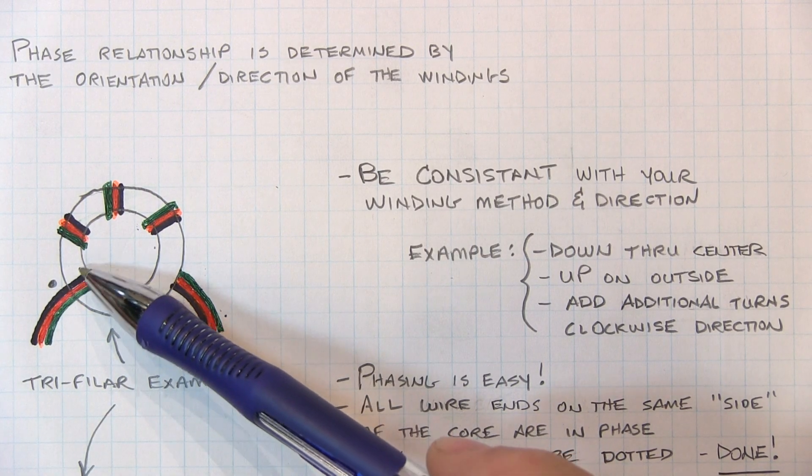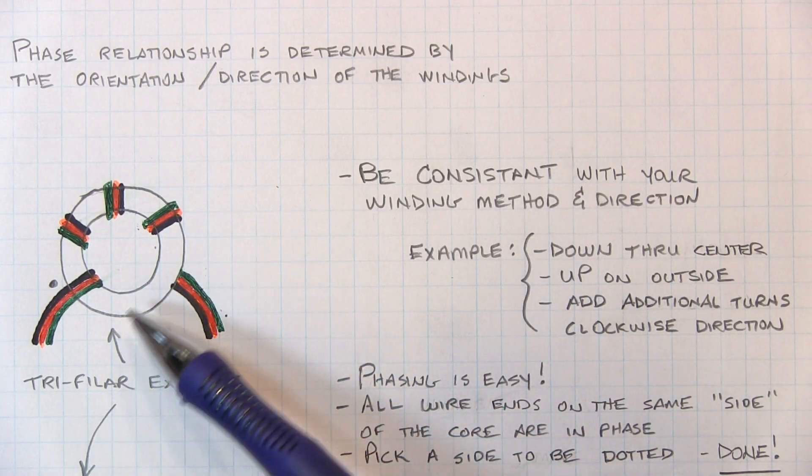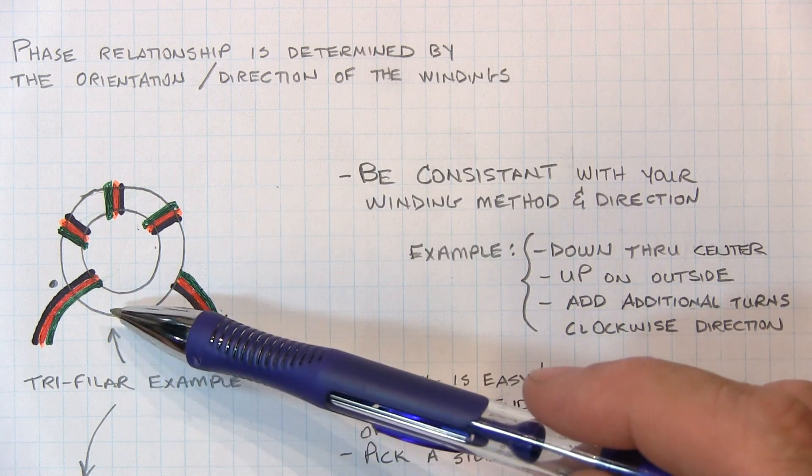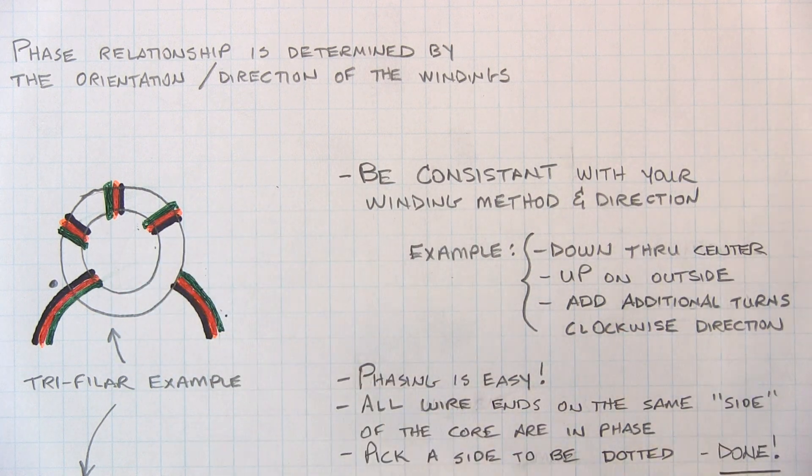Be consistent in the direction in which you wind the turns, and also be consistent in the direction that you add additional turns going around. Don't go around the other way, for example. If you're consistent with every one of the windings that you add to the transformer, then it's real easy to determine the phasing.